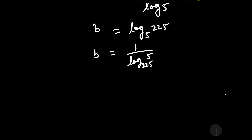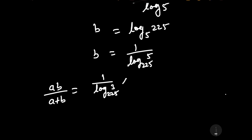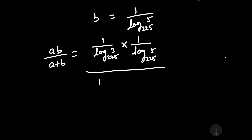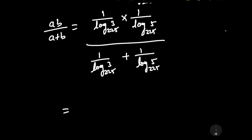Now we have to find the value of AB by A plus B. Substituting the values: A is 1 upon log base 225 of 3, and B is 1 upon log base 225 of 5. Taking LCM, we write 1 upon log base 225 of 3 multiplied by log base 225 of 5 in the numerator setup.